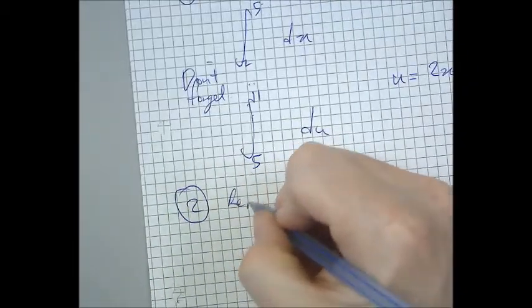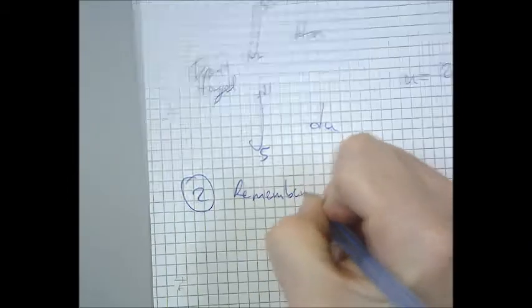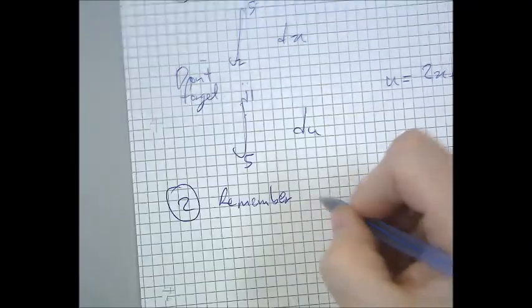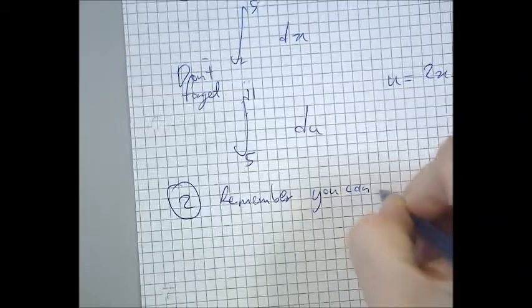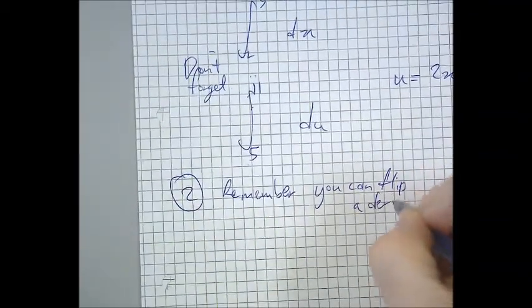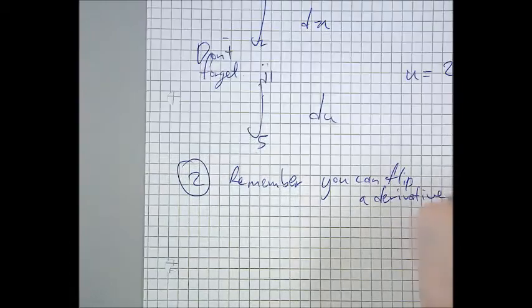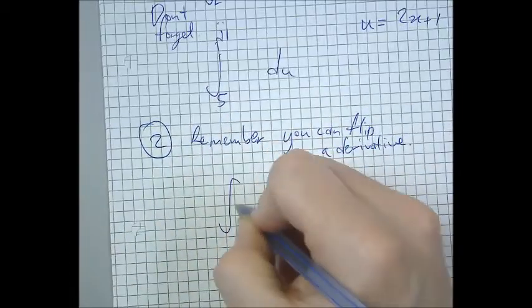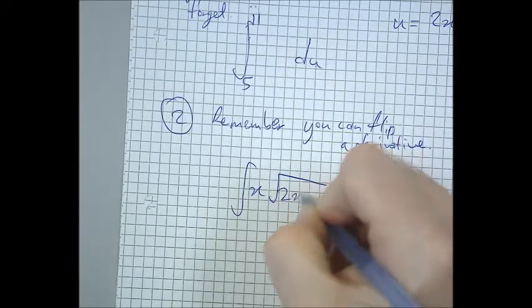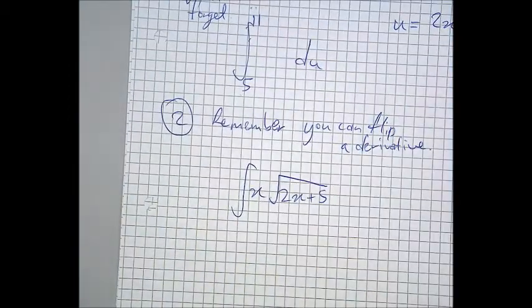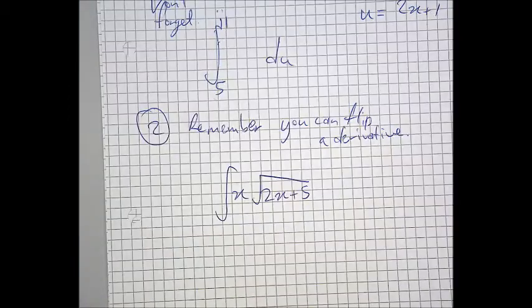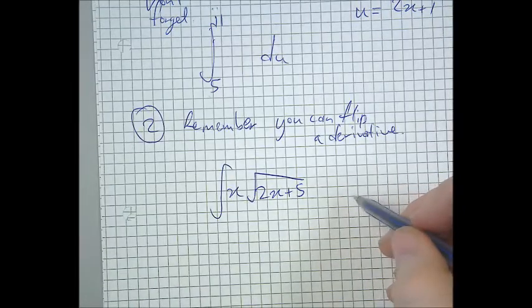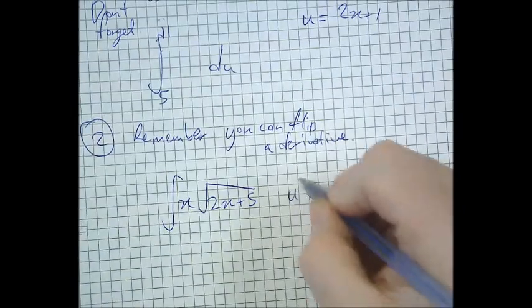Now, second subtlety is remember, you can flip a derivative. Okay, so I'll give you an example. In this question we did before, we had u equals 2x plus 5. This would have also worked.